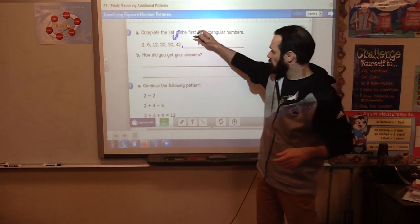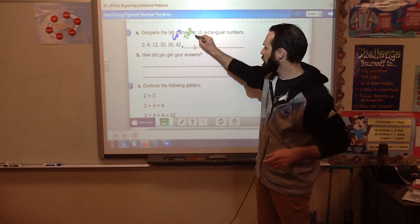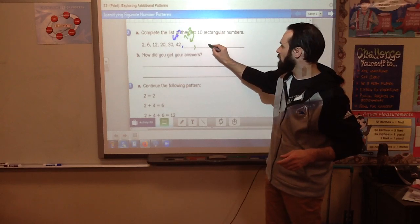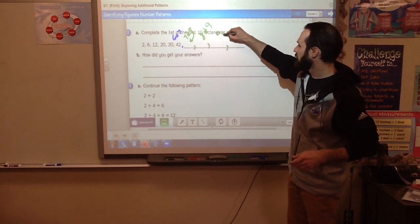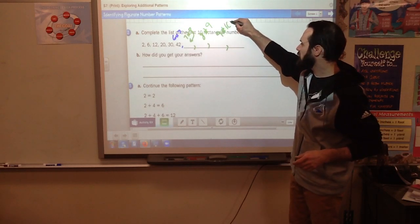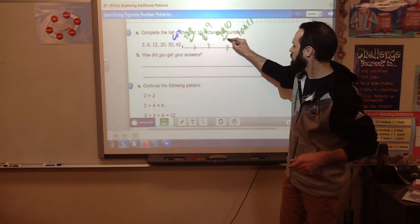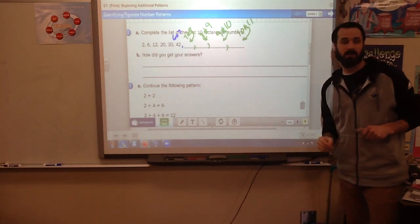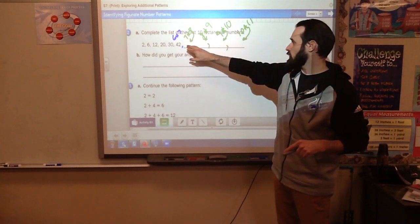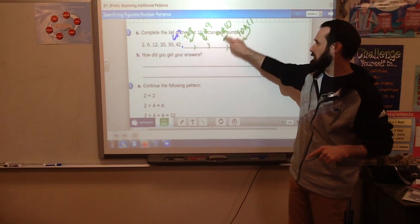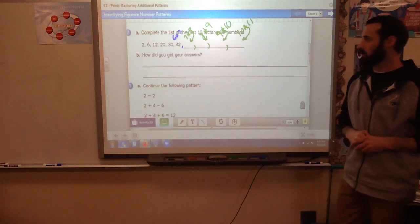The next one would have been 7 times 8, then 8 times 9, then 9 times 10, and 10 times 11. Here's what I need you to do: I need you to try and solve 7 times 8, 8 times 9, 9 times 10, and 10 times 11, and write those in. When you have those, hit play and I'll go over them with you.